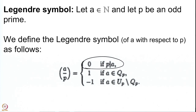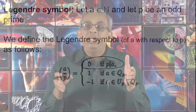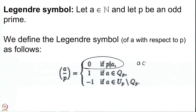For all natural numbers A which are divisible by P, the Legendre symbol is 0 — that is when A is congruent to 0 mod P. Whenever A is not congruent to 0 mod P, the Legendre symbol can be 1 or −1 depending on whether A is a square modulo P or not. So this Legendre symbol has 3 values.